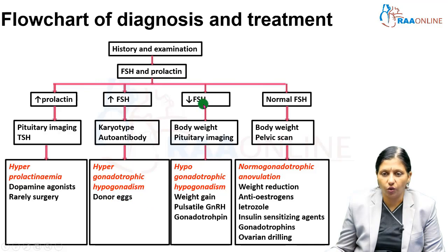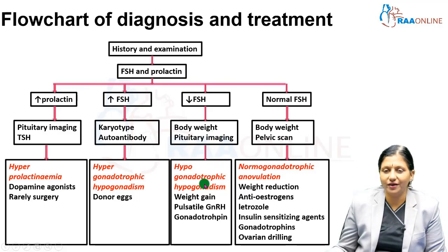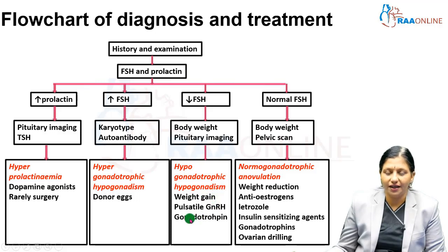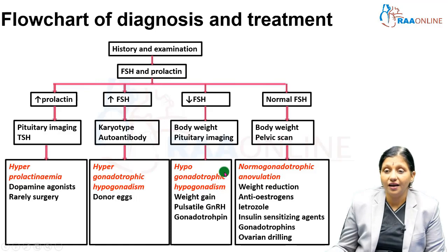If FSH is low, pituitary imaging is done and body weight is measured. These patients are usually cases of anorexia nervosa or pituitary tumors and are classified as hypogonadotropic hypogonadism — WHO Group 1. They can be treated with pulsatile GnRH therapy, gonadotropins, or advised weight gain in cases of bulimia nervosa.